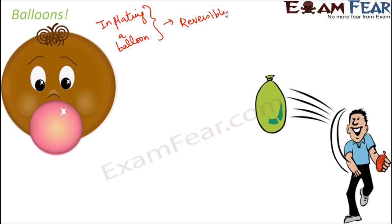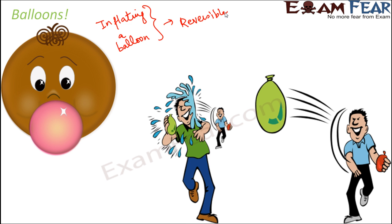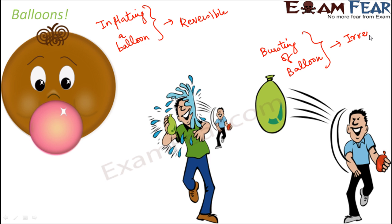Now when you talk about bursting a balloon — let's say you have a balloon and you throw it on somebody such that it bursts. When the balloon bursts, the shape and size of the balloon changes. Now in this case, can you get back the balloon? Once the balloon is burst, it is gone — you cannot join it back to form the same balloon. So this would be an irreversible change. When you are inflating the balloon, you take out all the air from inside and you get back the same small balloon, so that is reversible. But when the balloon bursts, it is torn, so you cannot inflate it back — that is why it is an irreversible change.